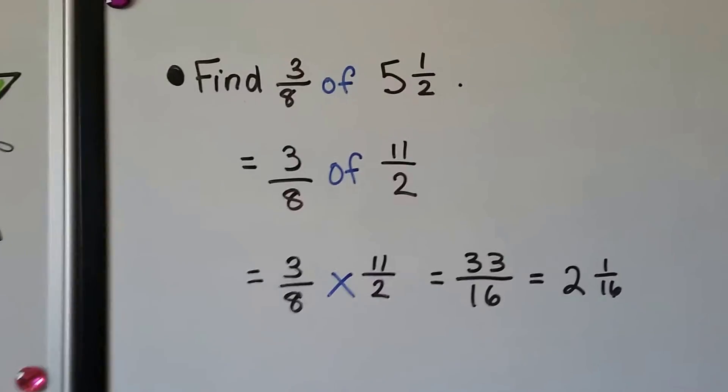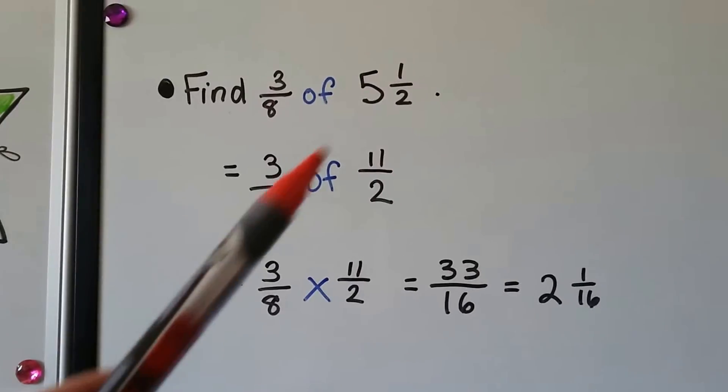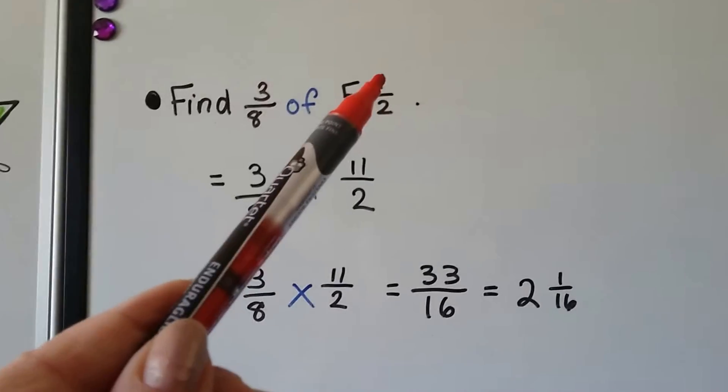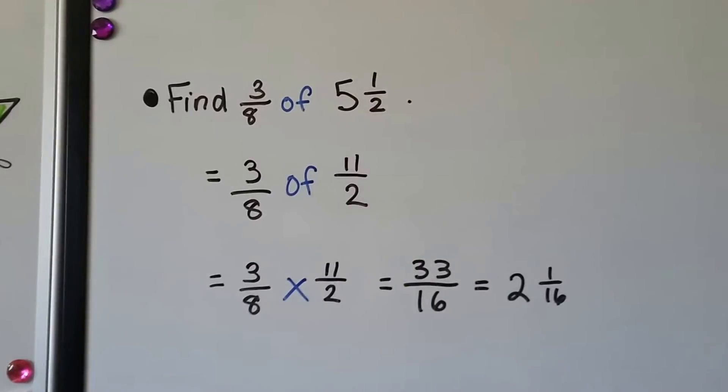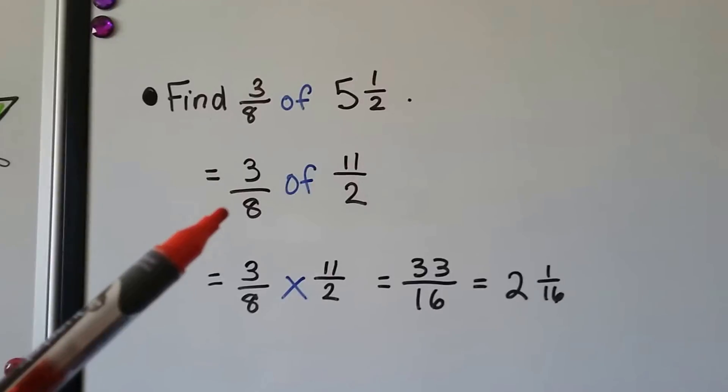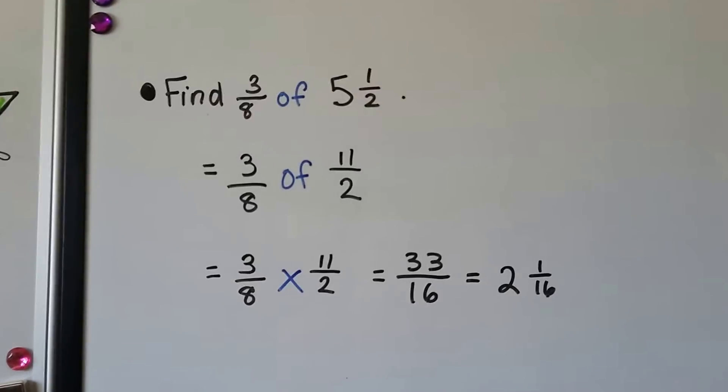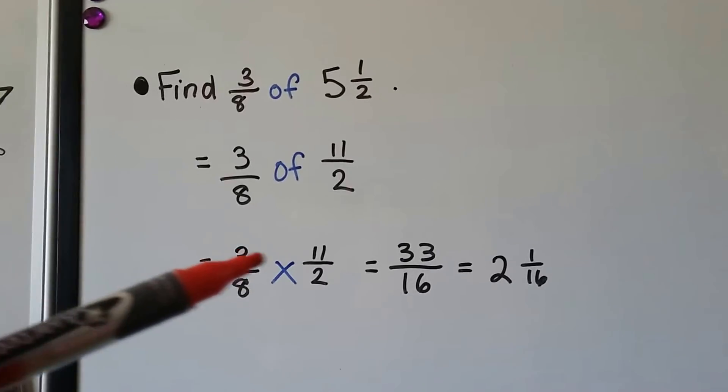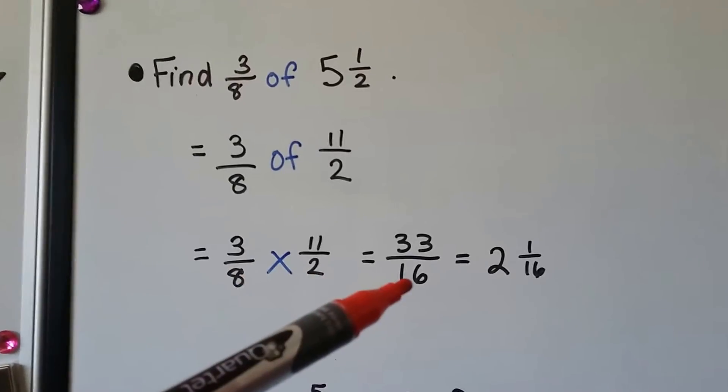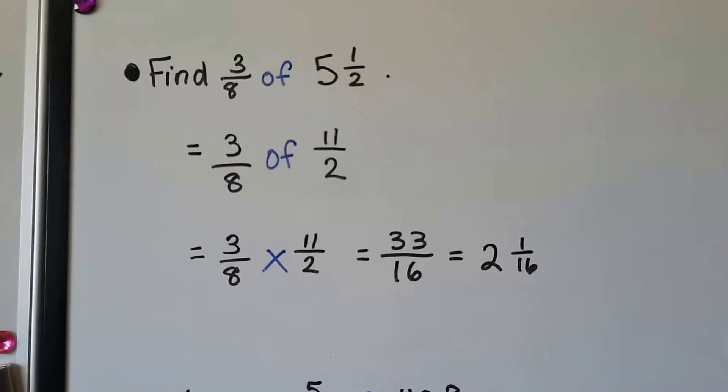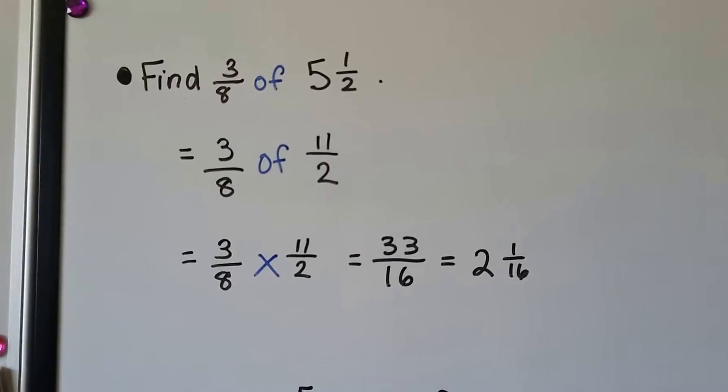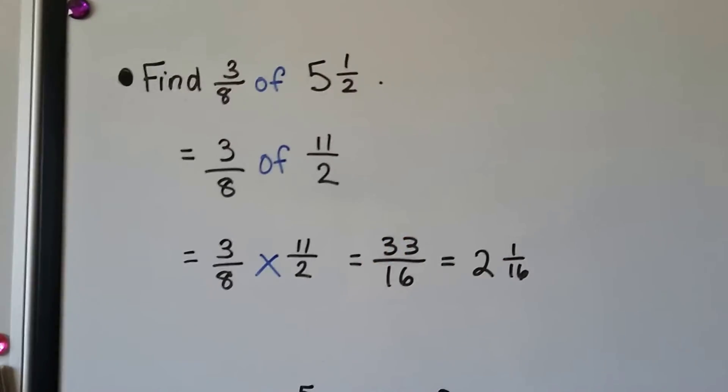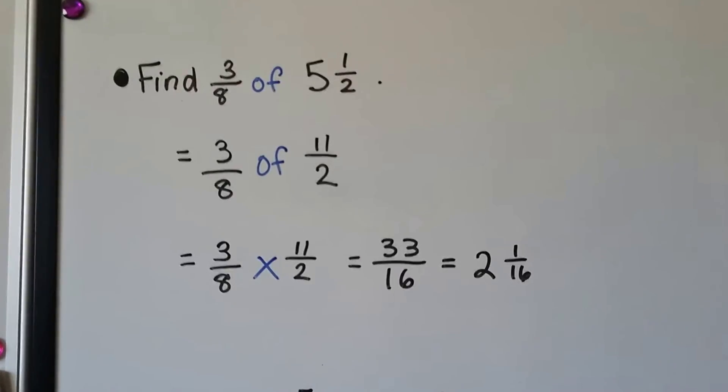Now let me show you these. It says find 3/8 of 5 and a half. So we need to turn this into an improper fraction. It means 3/8 times this improper fraction. We do 5 times 2 is 10 plus the 1 is 11. And we use that denominator 11/2. So now we have 3/8 of 11/2. We turn that 'of' into a multiplication sign. And I don't see any factors, any common factors here. So we're just going to do 3 times 11 is 33 over 8 times 2 is 16. And this is 33 divided by 16. How many 16s are in 33? Well, 16 plus 16 is 32. So there's two of them. And it's going to leave a 1/16 left over.